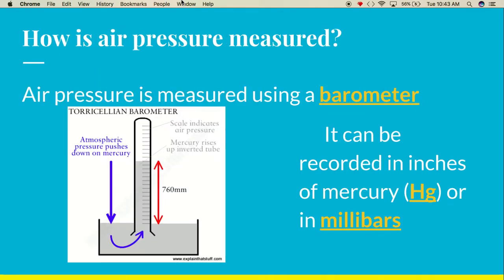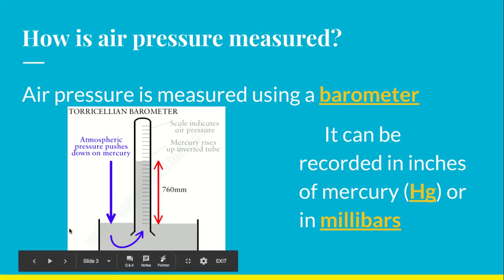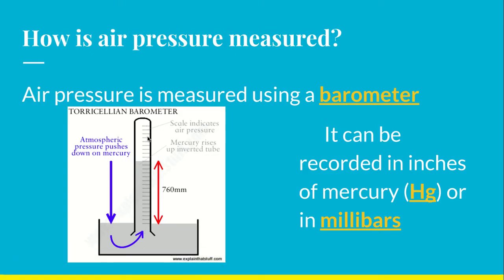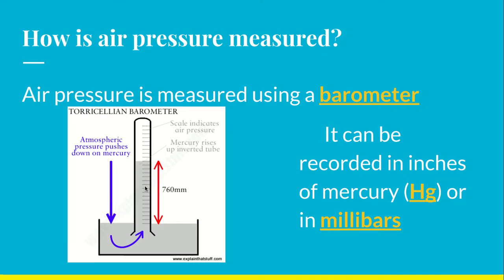We measure air pressure using an instrument called a barometer. Basically, air is pushing down on a substance called mercury, which is like a silvery liquid metal. As the air pressure increases, it pushes this mercury up a tube. So it can be measured in either inches of mercury — that's Hg — or in millibars. More air pressure means this value will get higher. As air pressure decreases, this value will drop.